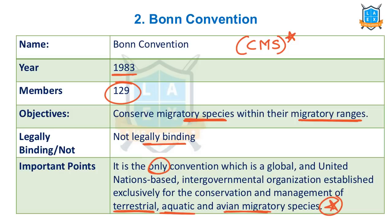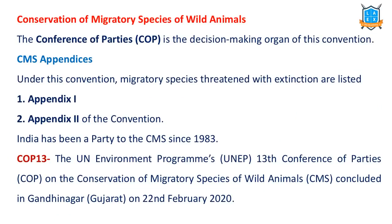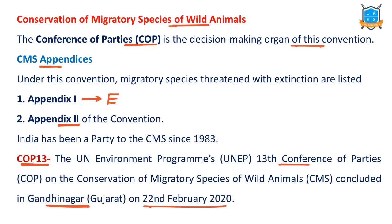Why is this in news? Because COP 13 of the Bonn Convention was held in India this year. The CMS COP is the decision-making body for this convention. Under CMS there are two important lists — Appendix 1 and Appendix 2. Appendix 1 deals with migratory species which are under extinction or threatened with extinction. Appendix 2 deals with other migratory species. The 13th COP was held in Gandhinagar, Gujarat on 22nd February 2020.